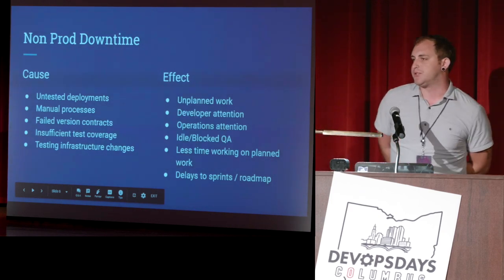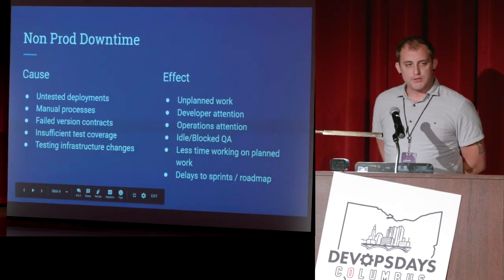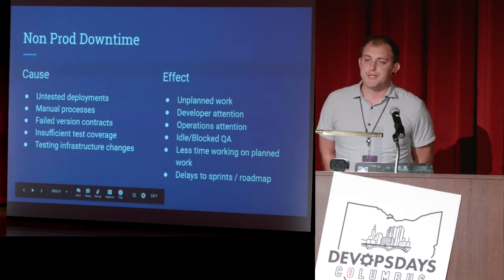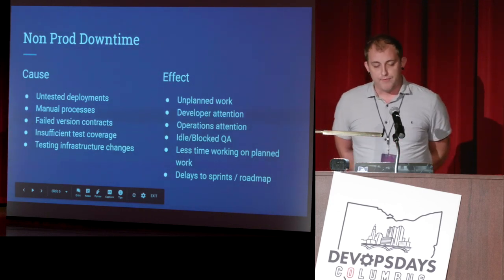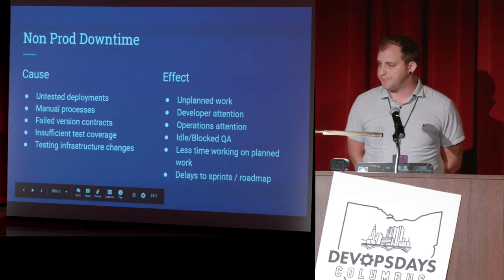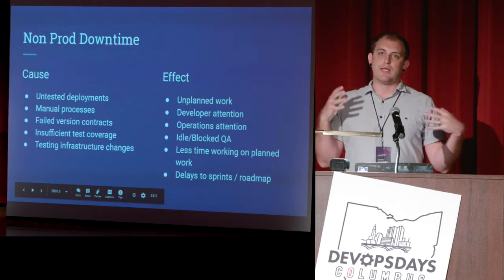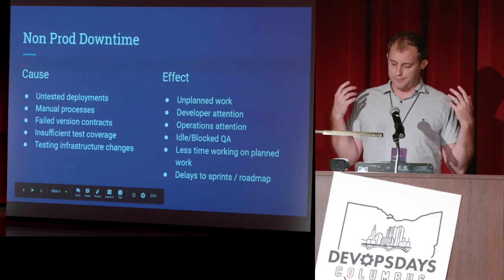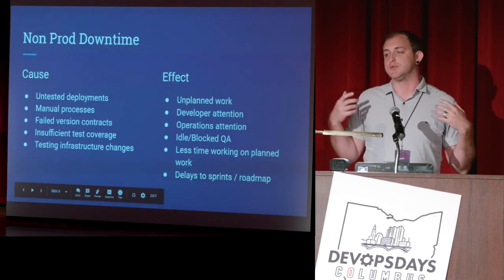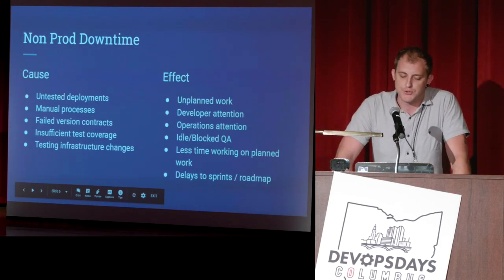Non-prod downtime — your test, QA, and dev environments. Causes of the downtime would be untested deployments, manual processes, and failed version contracts. That's like when there's an API contract between two services and a large change goes into one while the other isn't following that version contract — you're going to have issues.